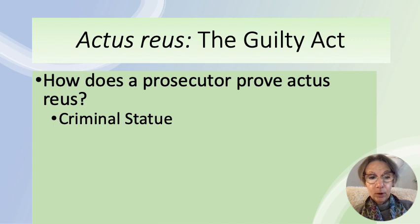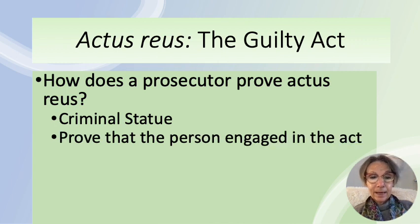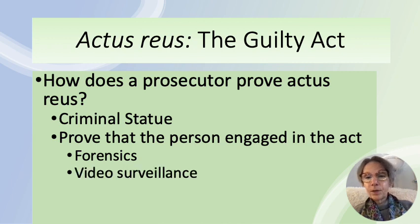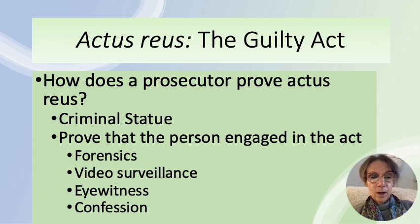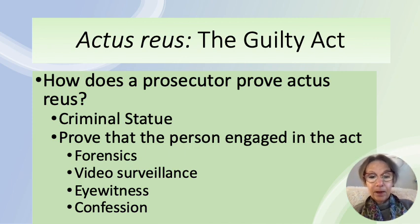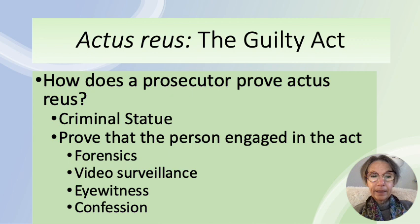Beyond the statute, the prosecutor must prove the specific person engaged in the act. This can be done through forensics, video surveillance, eyewitness testimony, or a confession — though confessions are less reliable if coerced. For example, a prosecutor might show fingerprints at the scene, surveillance footage of the person entering and leaving with stolen property, eyewitnesses, and a confession — all ways to prove actus reus.